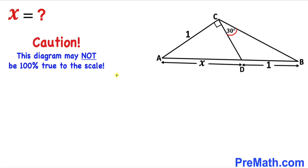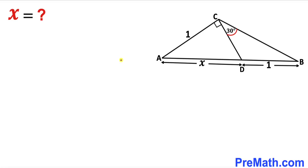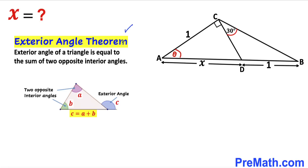Note that this figure may not be 100% true to scale. Let's get started. Let's focus on this angle — I'm going to call it theta. We know that this is our 90-degree angle. Now let's recall the exterior angle theorem: the exterior angle of a triangle is equal to the sum of the two opposite interior angles, as you can see in this diagram.